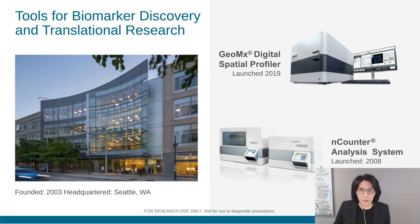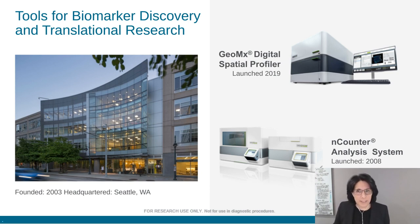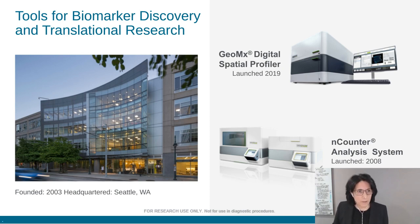Nanostring's business is focused on building tools for biomarker discovery and translational research. The company was founded in 2003 from technology out of the Institute of Systems Biology and is headquartered in Seattle, Washington. The company has over 700 employees globally with deep expertise in life sciences tools and is a leader in the spatial biology technology space. Our two main instrument products are displayed in this slide, and our technologies have been featured in over 4,000 peer-reviewed publications. Although our primary focus is not diagnostics, we do have a history in developing diagnostic products, as featured by Prosignia for breast cancer.